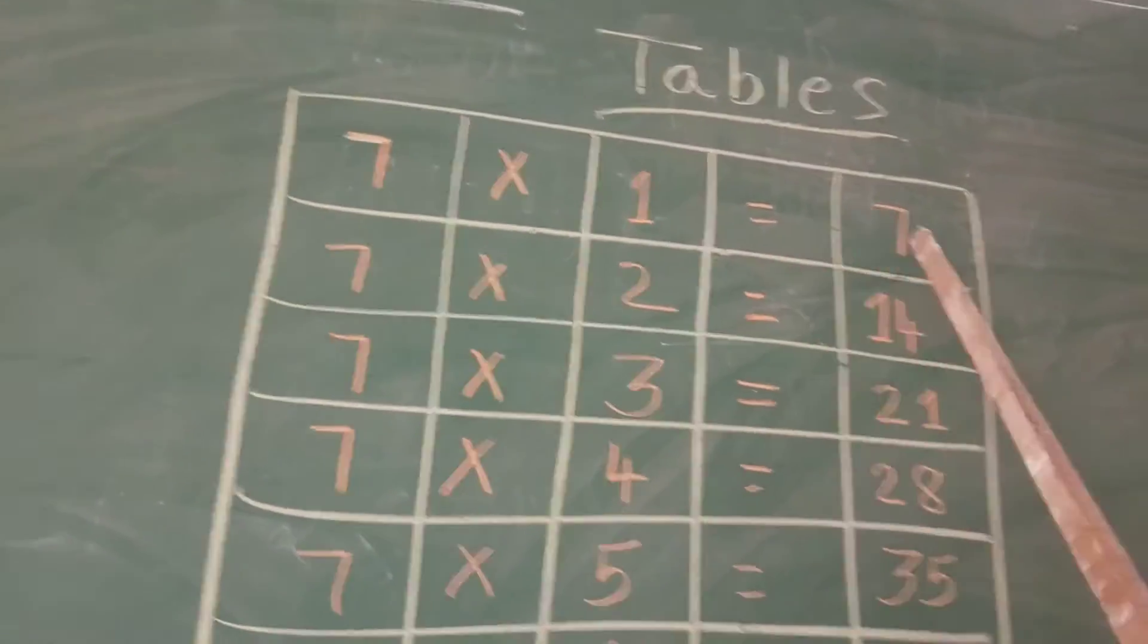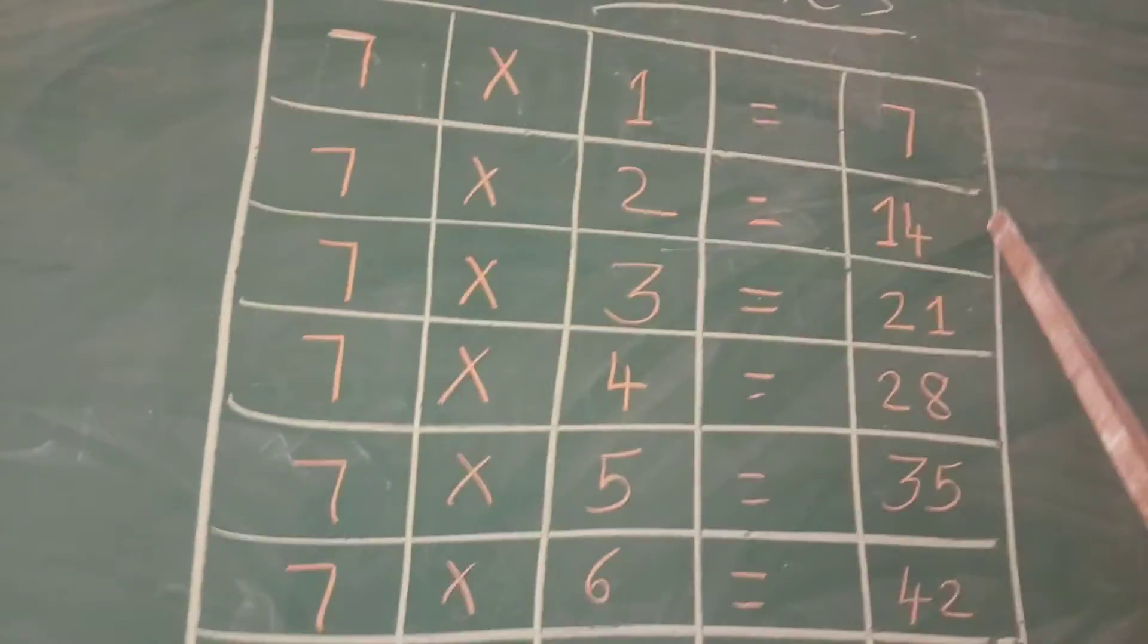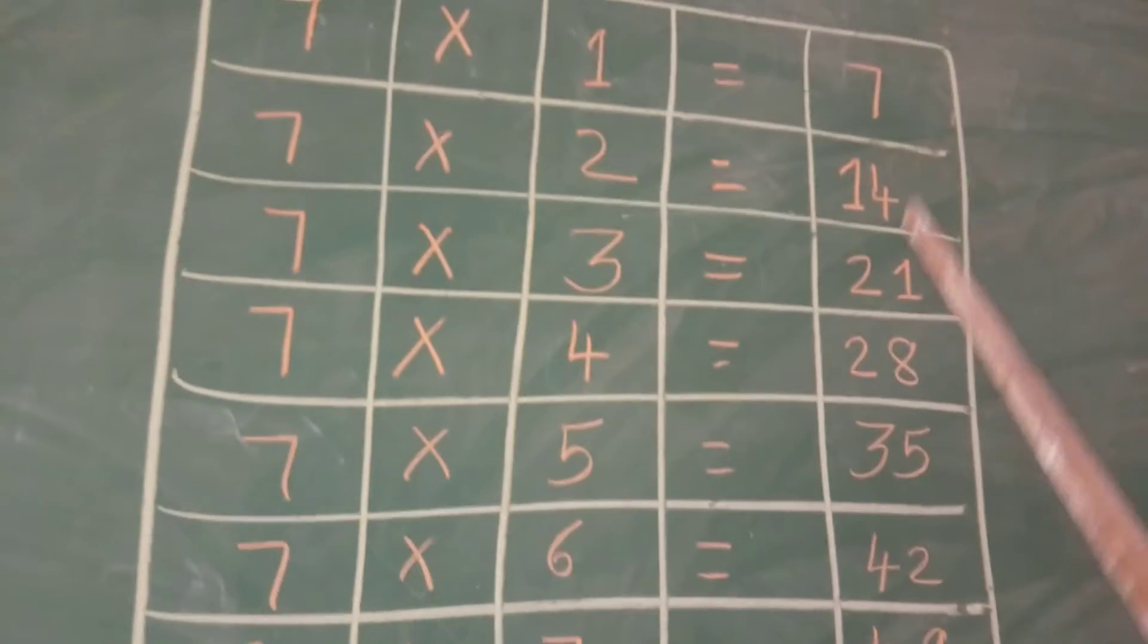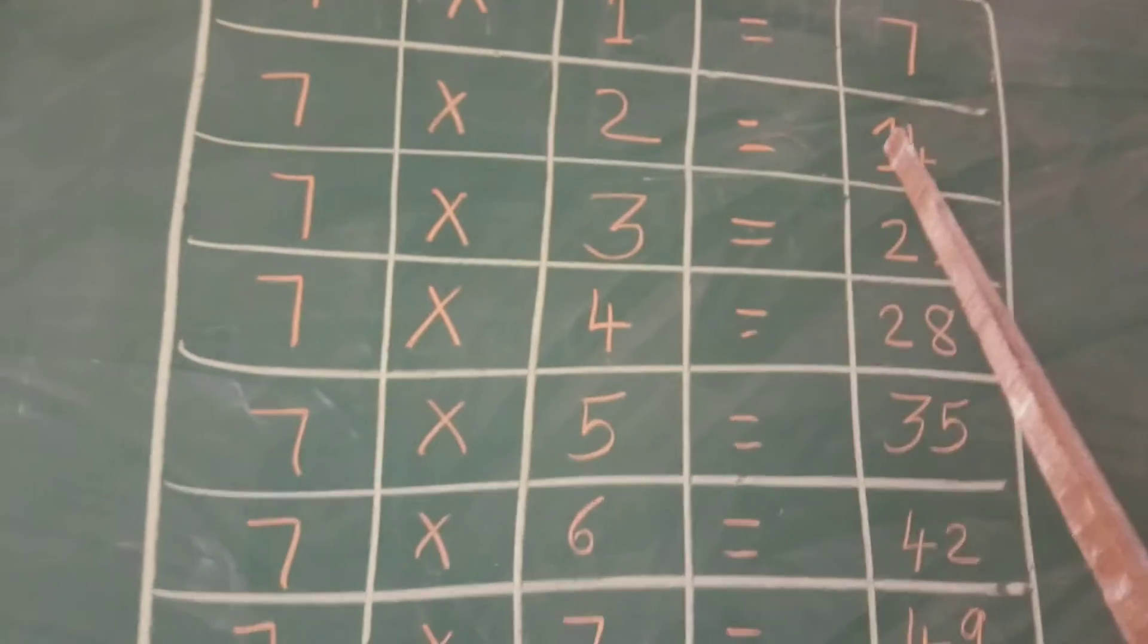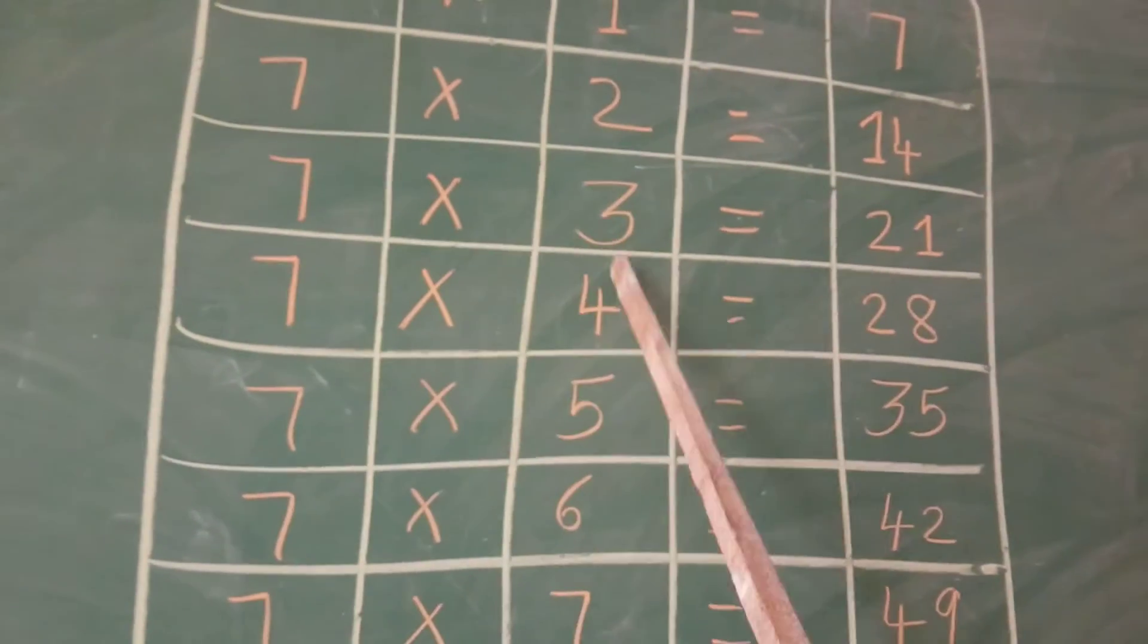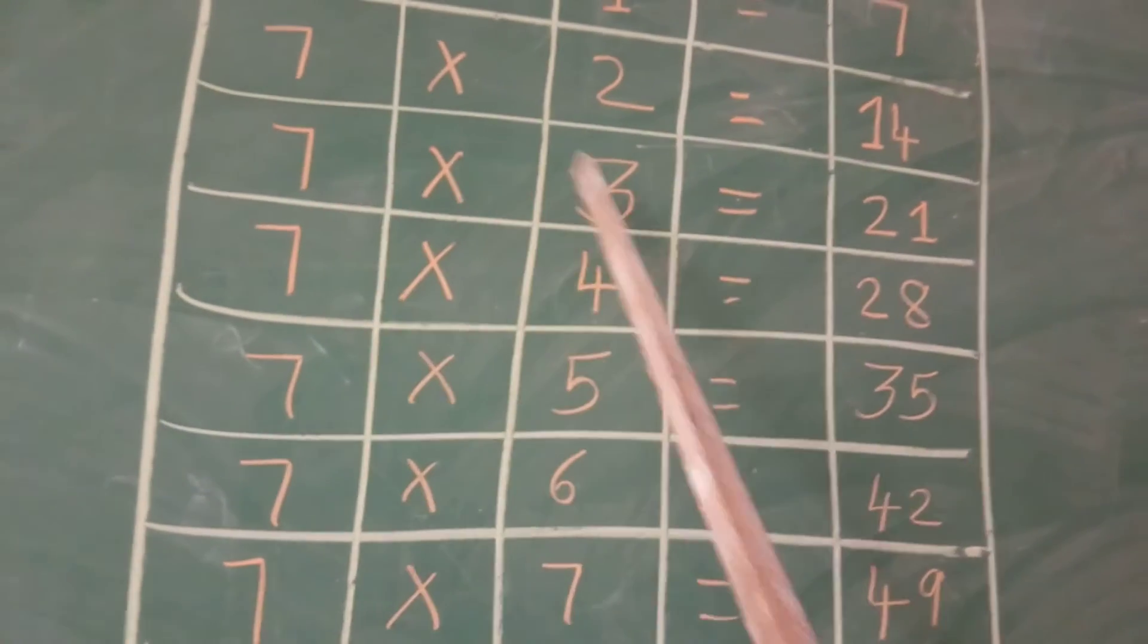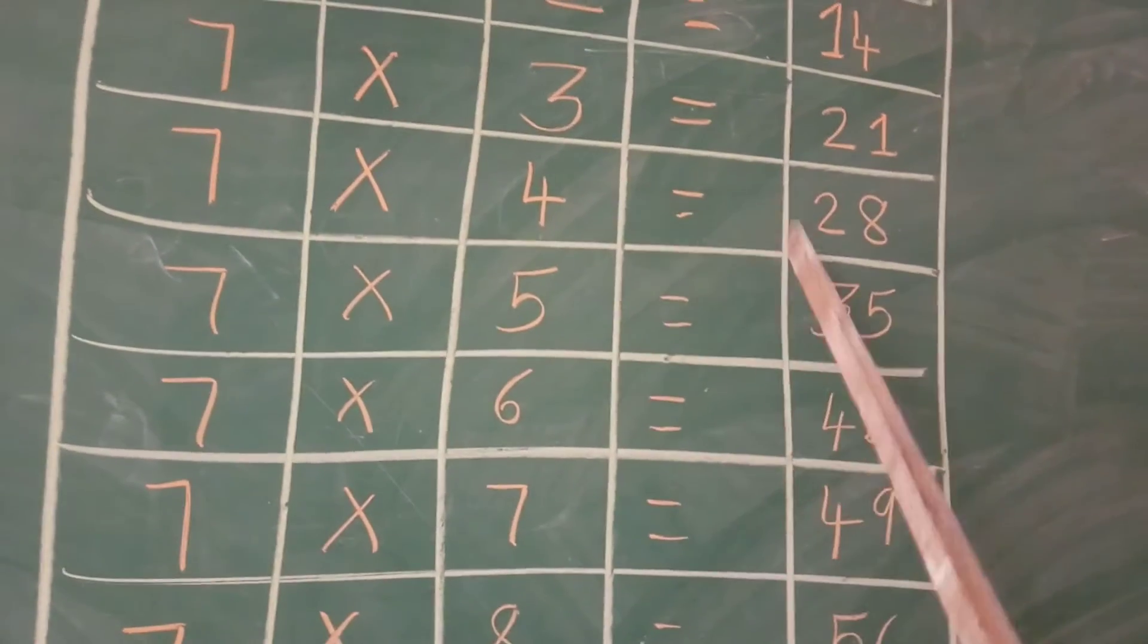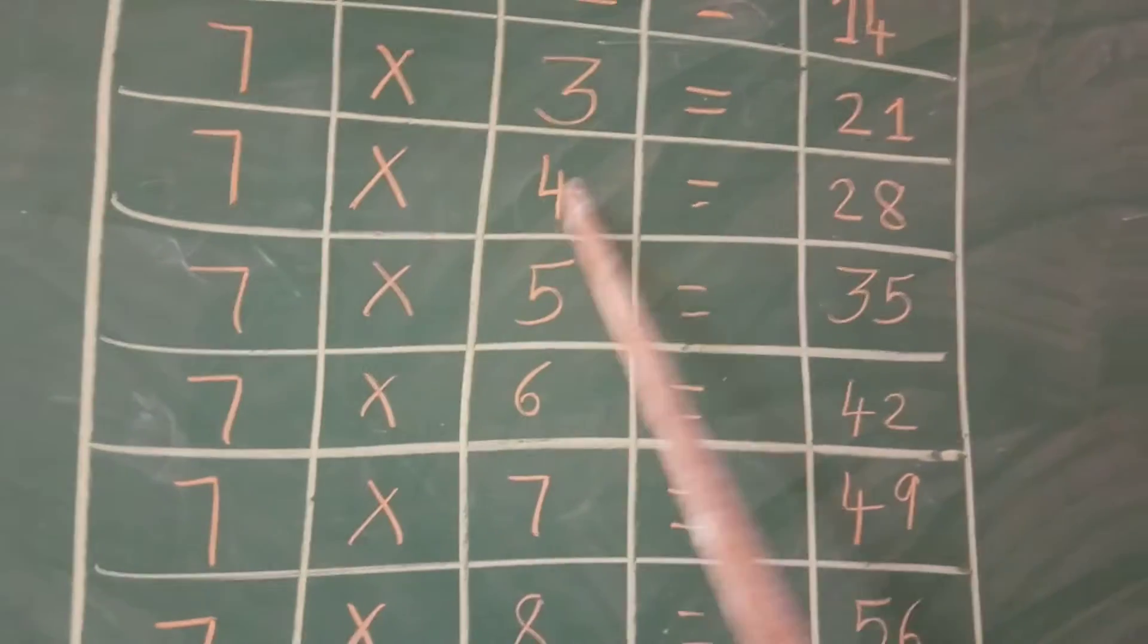7 into 1 is equal to 7. 7 ones are 7. 7 into 2 is equal to 14. 7 twos are 14. 7 into 3 is equal to 21. 7 threes are 21. 7 into 4 is equal to 28. 7 fours are 28.